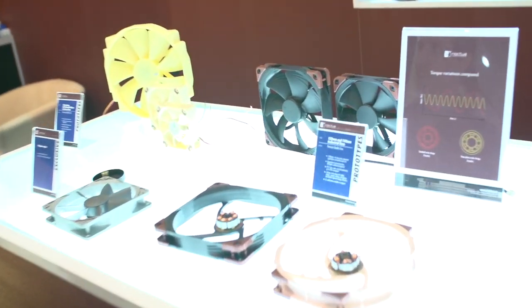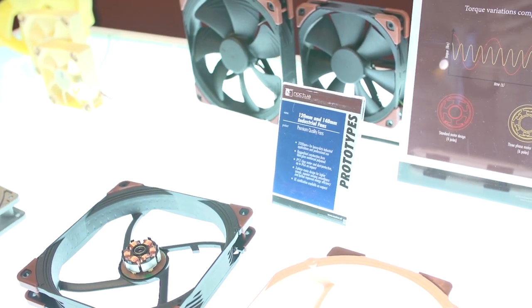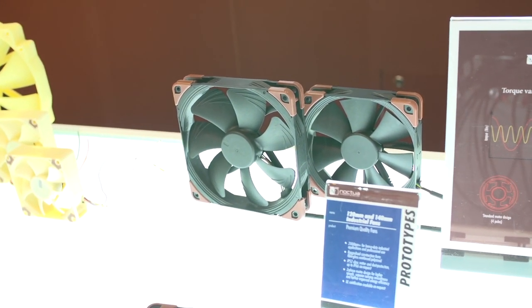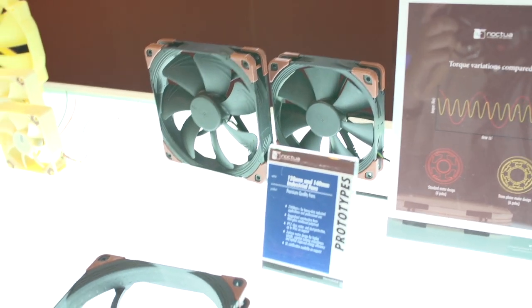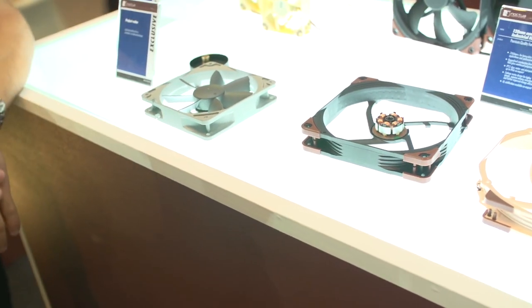These are black fans targeted for industrial customers. They are made from fiberglass reinforced polyamide, which is even more rigid than the fiberglass reinforced PBT we normally use. They will also come with IP class 52 water and dust protection and a new six-pole motor design.